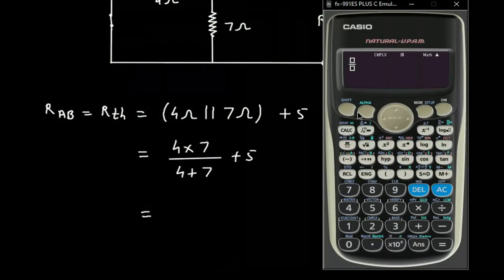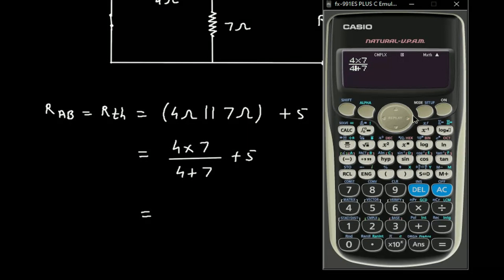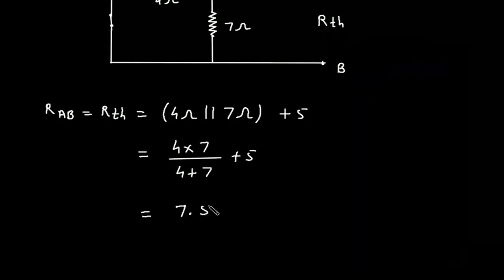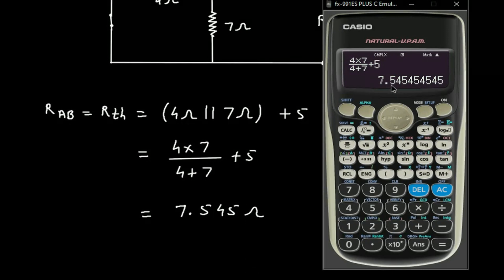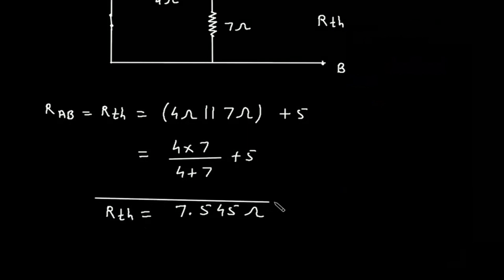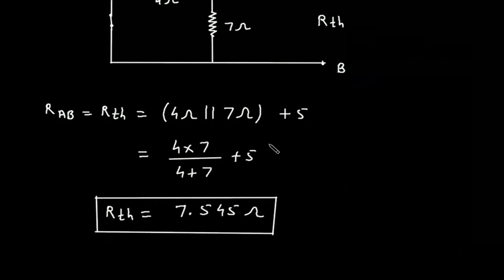So this will be 4 into 7 divided by 4 plus 7, plus 5. This gives us the value of RTH. Now we have to find VTH.